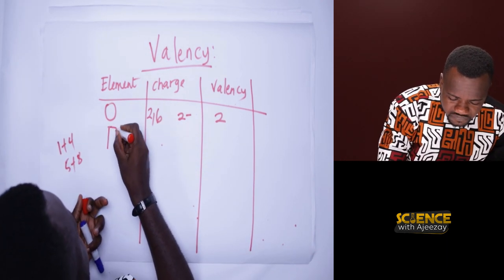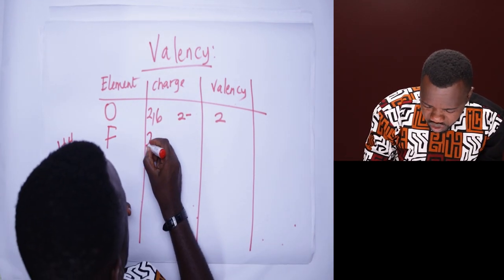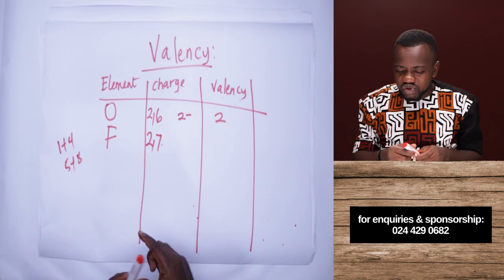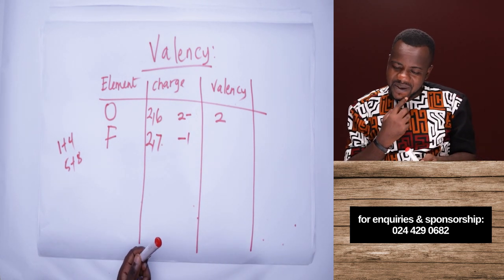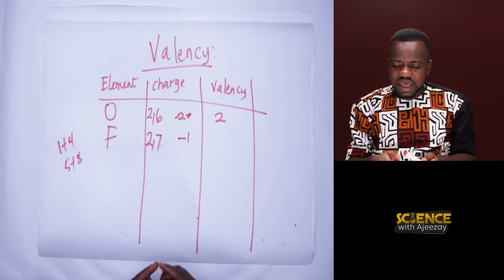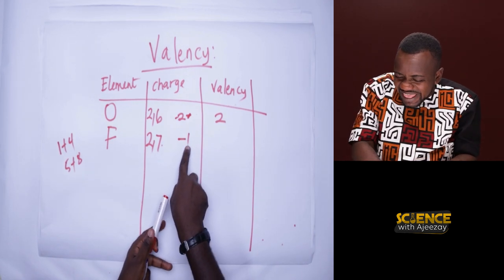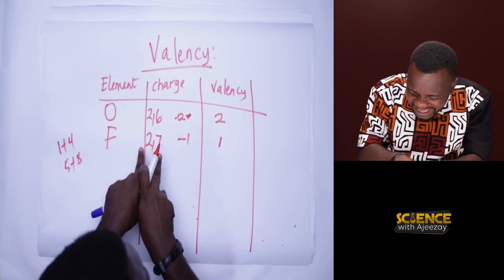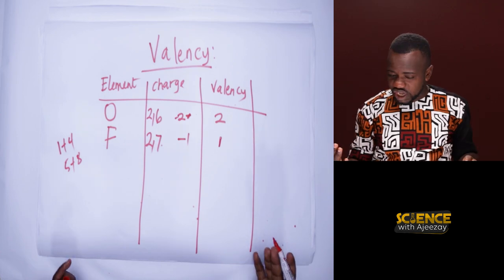Let's take fluorine. Fluorine is element nine, and its configuration is 2 and 7. Fluorine needs only one more electron to be stable. So the charge it will form is minus one. The valency is the number attached to the charge, which is one. Or you calculate eight minus seven, which also gives one.